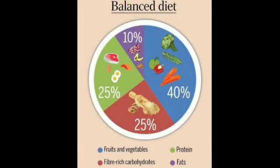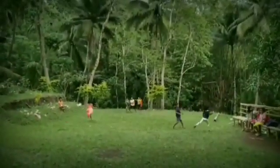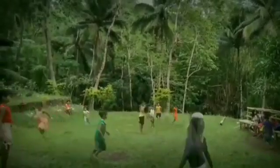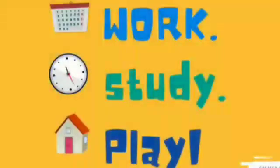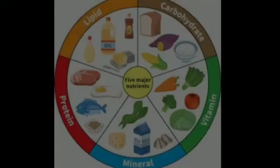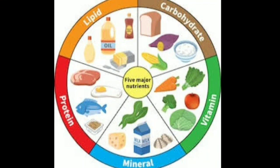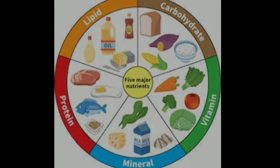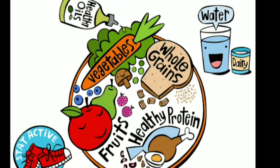A balanced diet. Being fit and fine means that we have enough strength and energy to study, play and carry out all our tasks quite easily. Our body is growing well and we do not fall ill every now and then. For good health, our body should get all the different constituents of food — namely carbohydrates, proteins, fats, vitamins and minerals — in the right quantities. A diet which provides all these constituents in the right quantities is called a balanced diet.